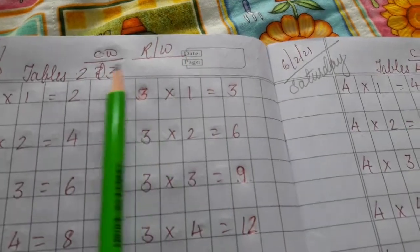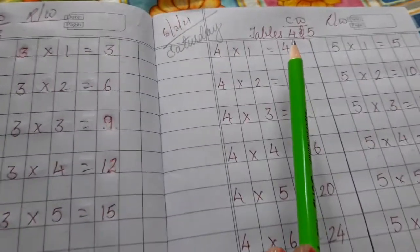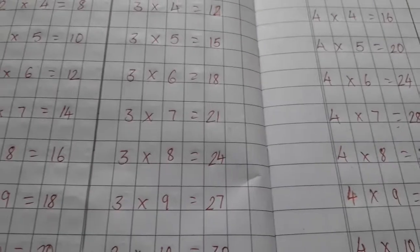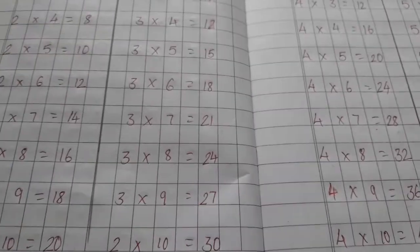Children, you have to learn all this table 2, 3, 4 and 5, also write in your notebook very neatly. Understood? Bye-bye.